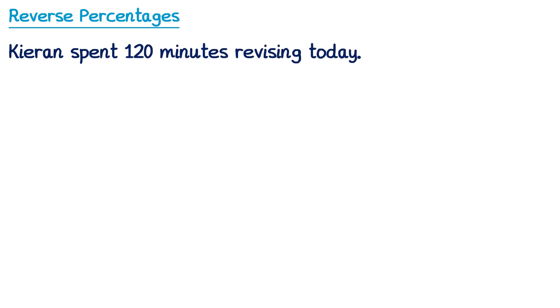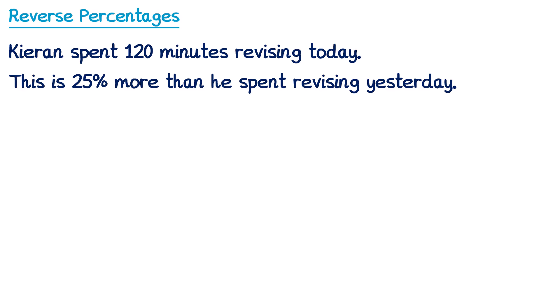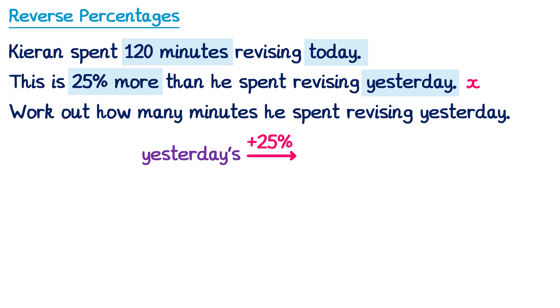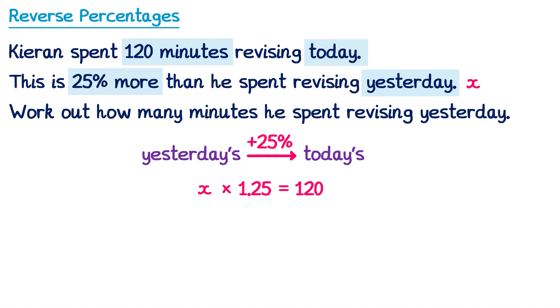Let's try applying this to another question. We're told that Kieran spent 120 minutes revising today, which is 25% more than he spent revising yesterday. We need to work out how many minutes he spent revising yesterday. We don't know yesterday's amount so we call it x. We know the multiplier for a 25% increase is 1.25, and today's amount is 120 minutes. So we form the equation: x multiplied by 1.25 equals 120.